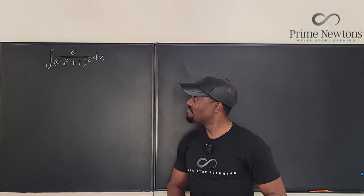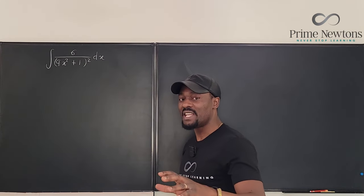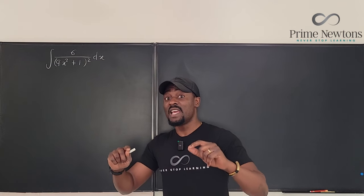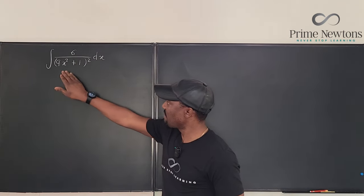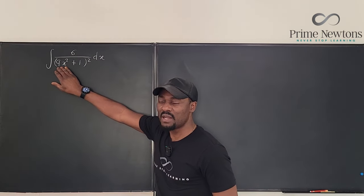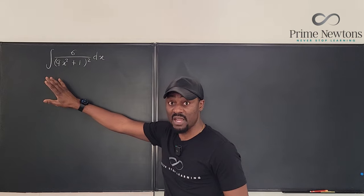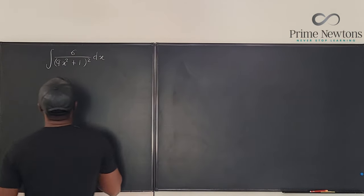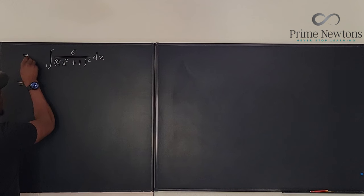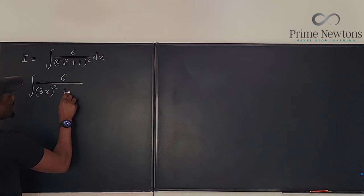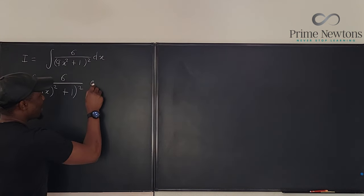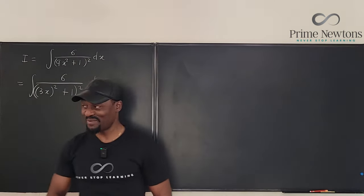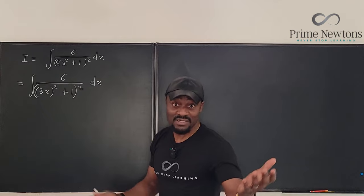The first thing we're going to do is know what to substitute. You see when you know the identity that tan squared theta plus 1 is equal to secant squared theta, you want to make sure that whatever is here is representing tan squared theta and you have your plus 1 here. So everything here has to be tan squared theta, and in order for this to be tan squared theta you have to write this as the square of something. So this integral, let's call it I, is equal to the integral of 6 divided by 3x squared plus 1 and everything is squared.